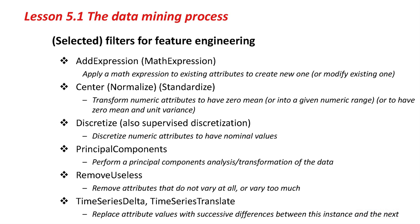The key technical part of all this is feature engineering, and Weka has got a lot of features that will help with this. It might be worthwhile defining a new feature — a new attribute — that's a mathematical expression involving existing attributes. With 'add expression', you can use any kind of mathematical formula to create a new attribute from existing ones. You might want to normalize or center your data or standardize it statistically: transform your numeric attribute to have a zero mean (that's 'center'), or transform it into a given numeric range (that's 'normalized'), or to give it a zero mean and unit variance (that's the statistical operation called 'standardization').